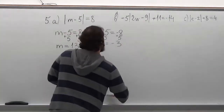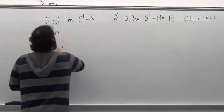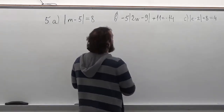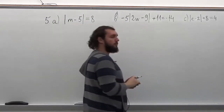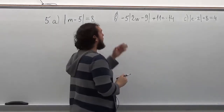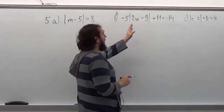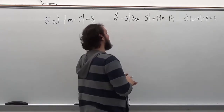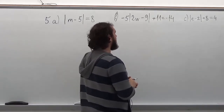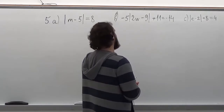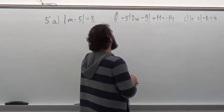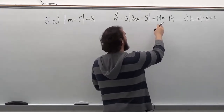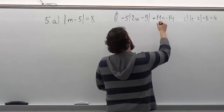In the second problem, what we want to do is have an absolute value and nothing else on one side, so that we can then do the same thing as we did in the first problem. So for that, the first step would be to add a negative 11 to both sides.